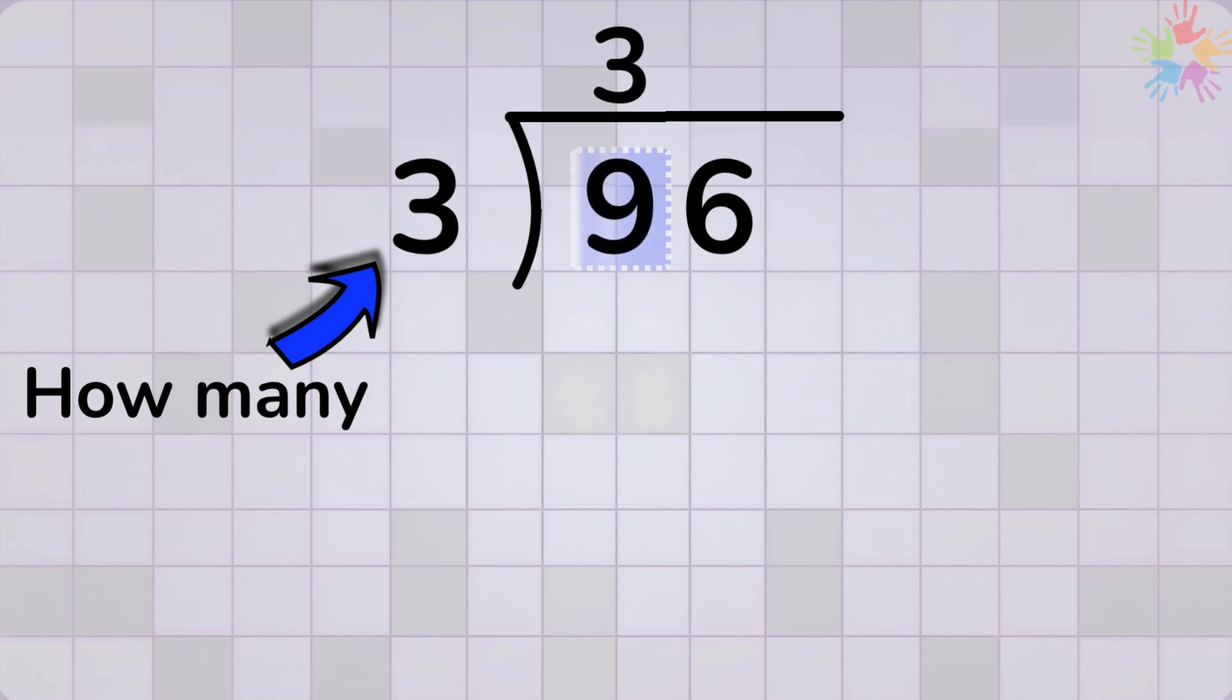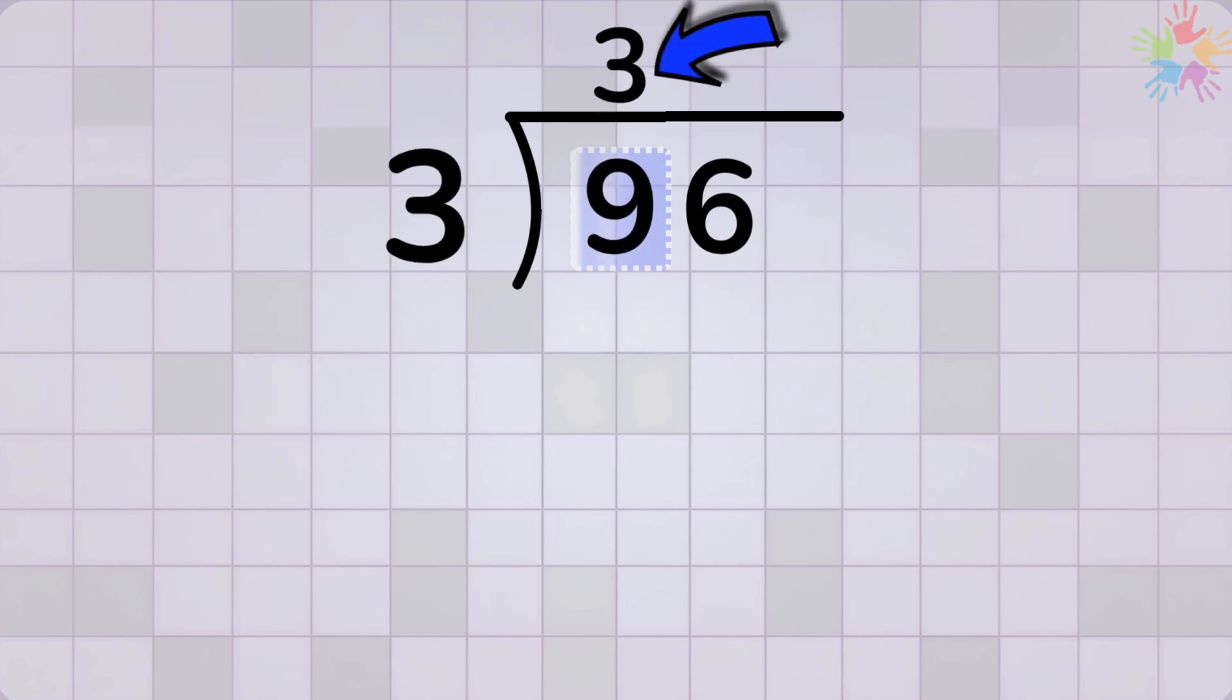That is 3 times. We write the number 3 at the top. Because 3 times 3 equals 9. Subtract. 9 minus 9 equals 0.